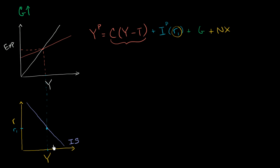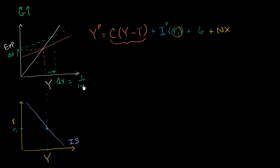Now, with all of that out of the way, let's think about what happens when government spending goes up. If government spending goes up — if this piece goes up — that will shift our planned expenditures up as well. A change in G shifts this curve up, and you get to a new equilibrium level of real GDP. That delta Y is actually going to equal the multiplier, which is 1 over 1 minus the marginal propensity to consume, times our change in government spending.